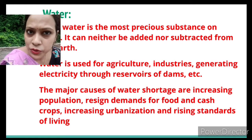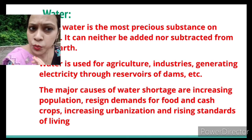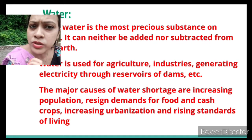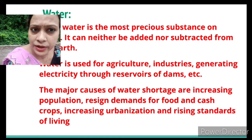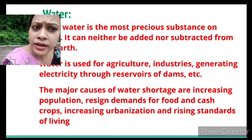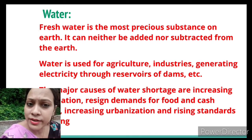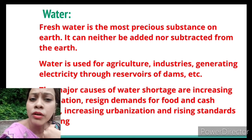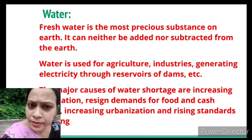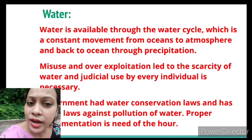The major causes of water shortage are increasing population — fresh water is very limited and saline water is not fit for consumption, so fresh water is in short supply. Other causes include increasing demand for food and cash crops, increasing urbanization, and rising standard of living. The main reason is increasing population, which drives increasing demand for drinking water, industrial use, and agriculture.